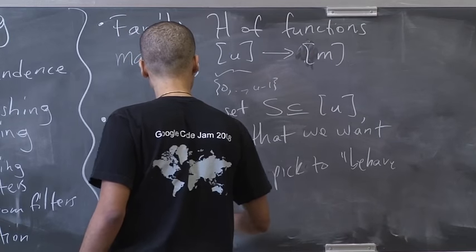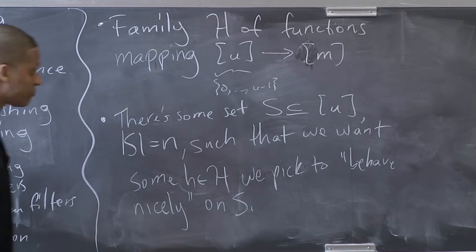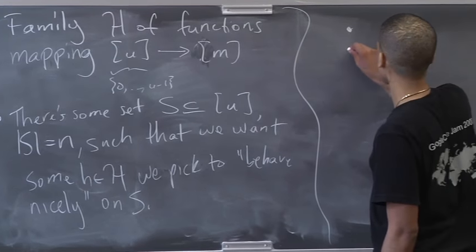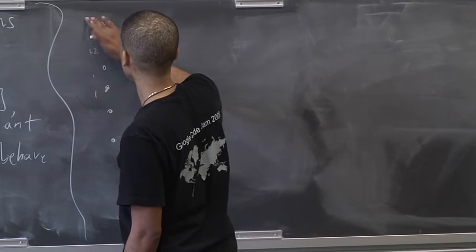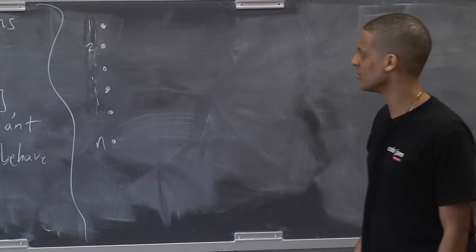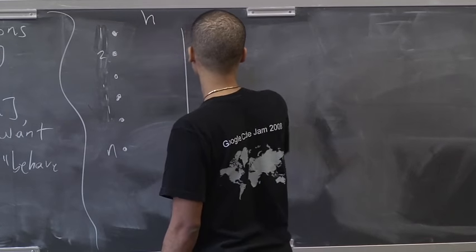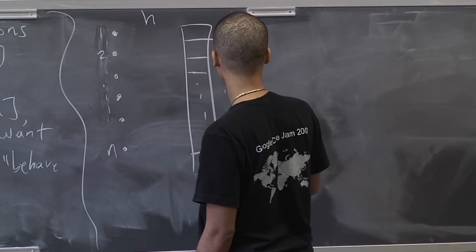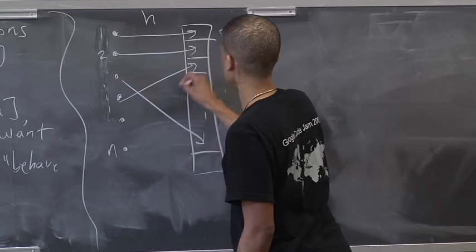We want some H in this family to behave nicely on S - for example, nothing in S should collide. The picture to have in mind: we have N items, and a hash function H that sends them into an array of size M with cells 0 through M minus 1. Each item gets hashed somewhere, and there could be collisions.